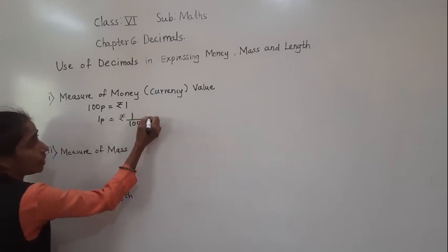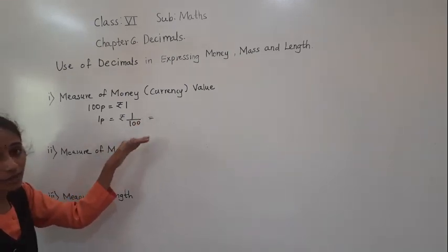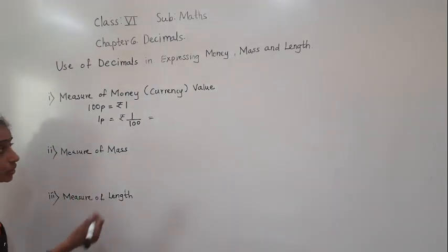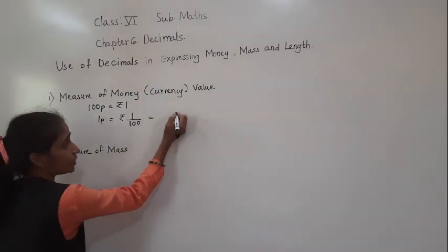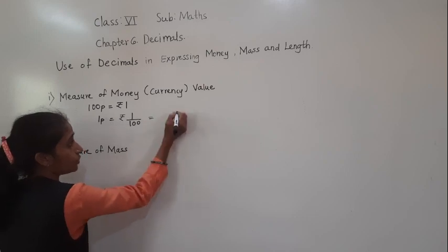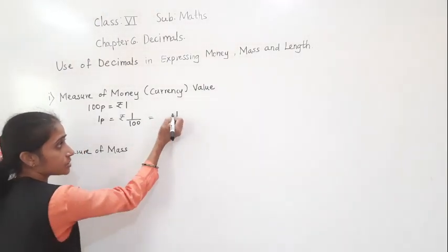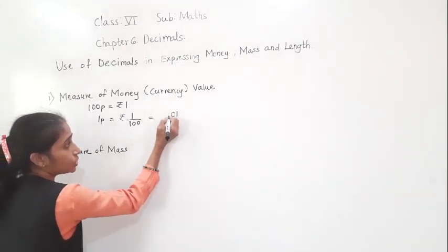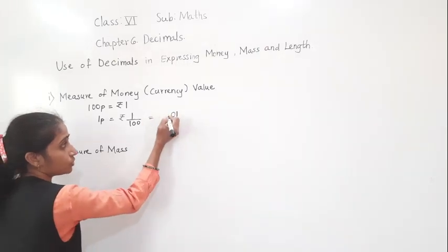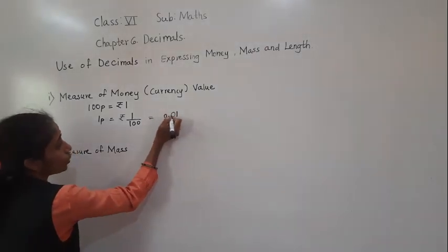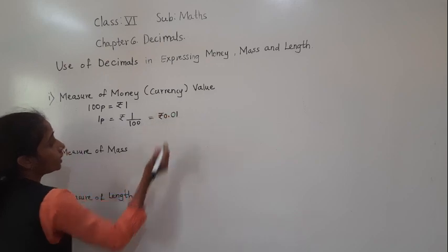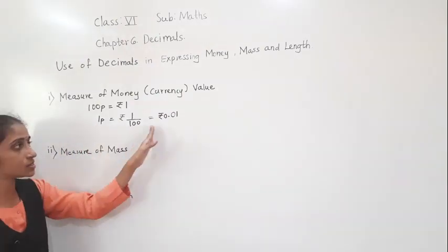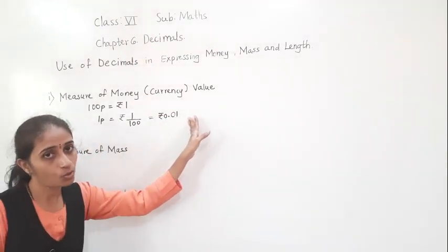So 1 upon 100. When we divide by 10, 100, or 1000, we shift the decimal point. Here there are 2 zeros, so we shift the decimal point before 2 digits from right towards left. Here we have only 1 digit, so we give one zero. So what we get is 0.01 rupees. That means 1 paisa is equal to rupees 0.01.